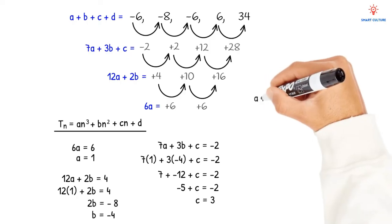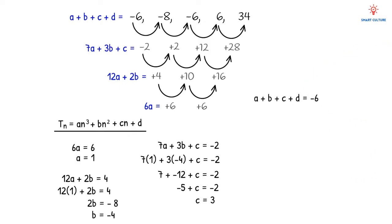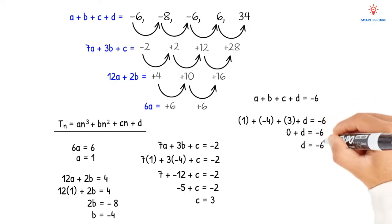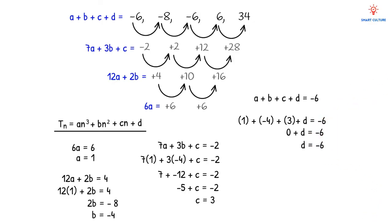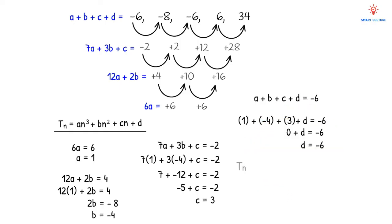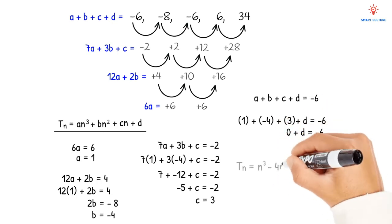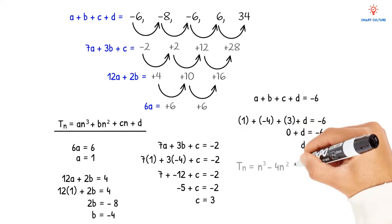Lastly, we solve for d using a + b + c + d = -6. With a = 1, b = -4, c = 3: 1 - 4 + 3 + d = -6, and since 1 - 4 + 3 = 0, we get d = -6. Substituting all values into the formula, the rule for the nth term of this cubic sequence is: tn = n³ - 4n² + 3n - 6.